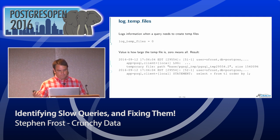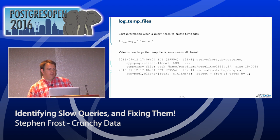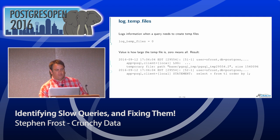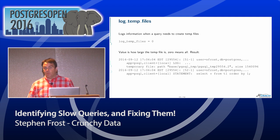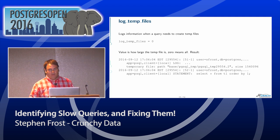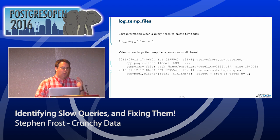If you don't have log_lock_waits enabled, I definitely recommend it. Another thing that can cause problems is temp files. Whenever temp files are created, the database has to do disk I/O — actually writing data out. Here you can see a SELECT ... ORDER BY, doing a sort using a temp file. That tends to be expensive because it means you're going out to disk for a disk-based sort. You can detect this by setting log_temp_files equal to zero, and then every time Postgres creates a temp file when running a query, it will log information about what that query was. That can be really helpful for figuring out why a slow query is using a lot of disk.